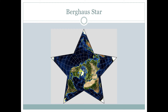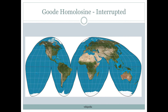This leads to the idea of an interrupted map projection, and this is the most famous of those — the Goode's Homolosine interrupted map projection. What this does is it puts in cuts, or tears, or gaps in the map projection in certain areas so that all of the continents are nicely shown without any interruptions, except of course for Antarctica.